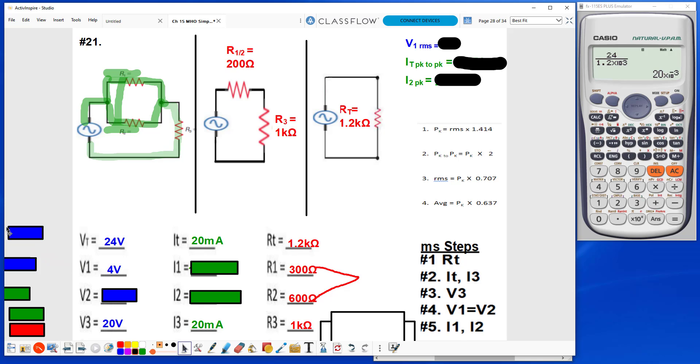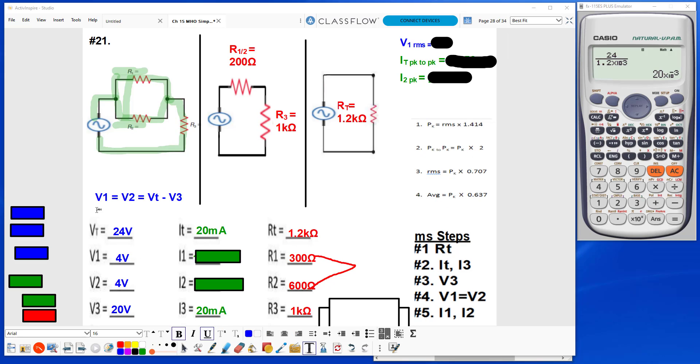So that tells us that V1 and V2 are both 4 volts, by applying this equation here. V1 is equal to V2, which is equal to the Vt minus V3.